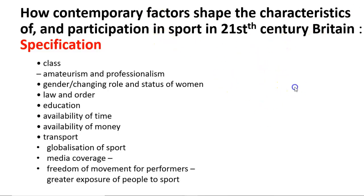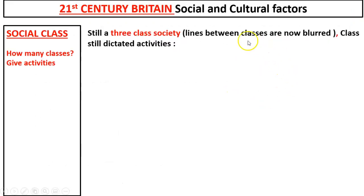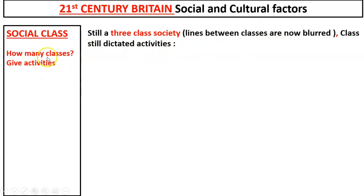Let's start with social class. It's still a three-class society, but now we have lines that are blurred between classes. It's quite easy to move between the classes, whereas in pre-industrial and post-1850 Britain, it was very difficult to move between classes.